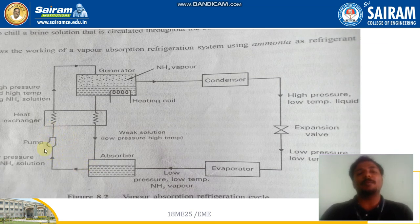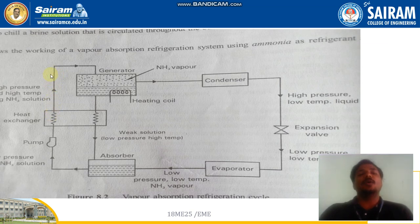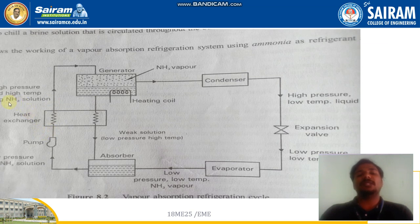Using a pump, the strong ammonia solution is pumped through the heat exchanger. Passing through the heat exchanger, the strong ammonia solution gets heated, increasing its temperature and pressure. The solution then moves with high pressure and high temperature toward the generator.